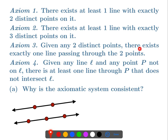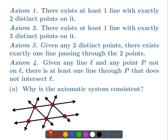Given any two distinct points, there exists exactly one line passing through the two points. Well, that's not satisfied yet, so we need to have lines passing through these different points. I haven't finished — there's no line passing through these two points and no line passing through these two points, so axiom three isn't correct yet. There we go — so axiom three holds: any two points will have a line passing through them.